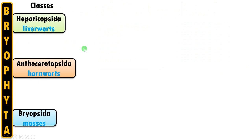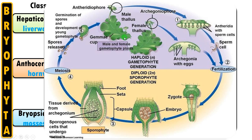The first class is Hepaticopsida or liverworts. They are called liverworts because these plants are widely used by herbalists for the treatment of liver ailments. Looking at the life cycle to understand the characteristics of this class: this is the gametophytic thallus which is flat and dorsiventral. This is the antheridia — the male sex organ — and this is the archegonia — the female sex organ. So sex organs are formed on the dorsal side of the thallus, that means on the upper side. Antheridia produce sperm cells or male gamete which are flagellated, whereas archegonia form the egg or female gamete; these undergo fertilization and form the zygote.